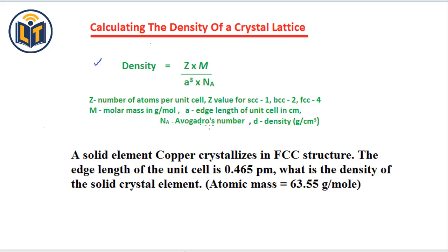Next is NA, that is Avogadro's number. It is a constant value. It is equal to 6.0 multiplied by 10 to power 23. And so, density is calculated in grams per centimeter cubed.